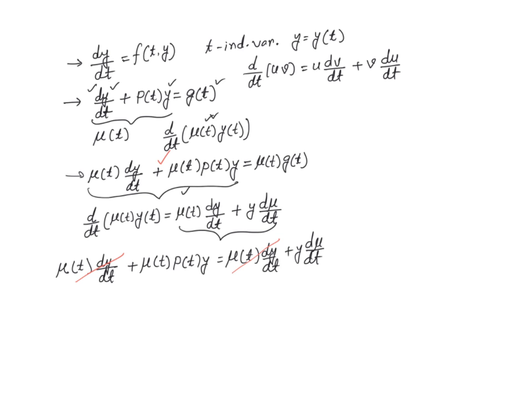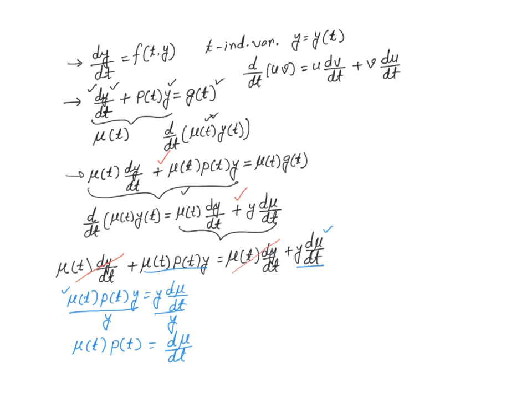We assumed that the left-hand side is equal to the right-hand side according to our assumption. Upon simplification, we get an expression where both sides contain y. We can divide both sides by y — assuming y is not zero — and on the left we get μ(t)·p(t) = dμ/dt.